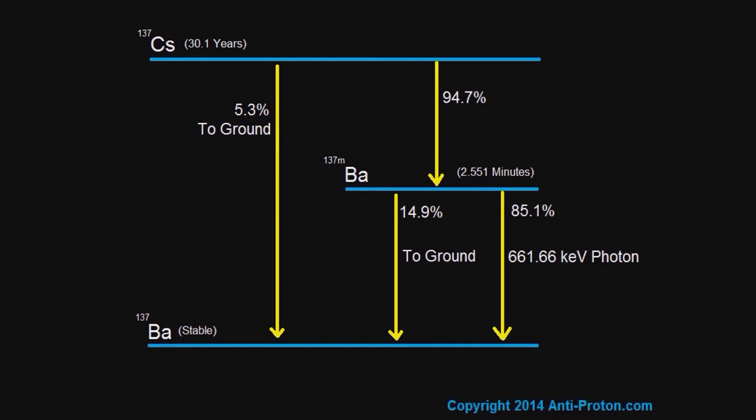And as you can see, 85.1% of the time this occurs by the emission of a gamma ray. The gamma ray that is emitted always has the energy of 661.66 kiloelectron volts. That's what we constantly measure, we use that for calibration. It's an absolutely wonderful energy to keep memorized. 14.9% it goes straight to the ground state. Barium-137m has a half-life of 2.551 minutes.